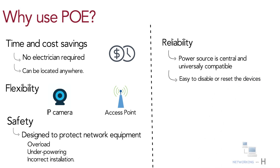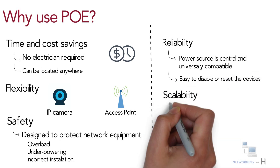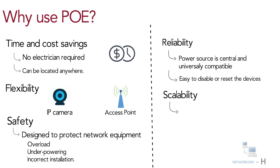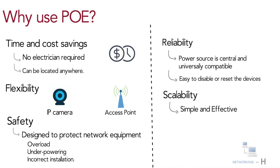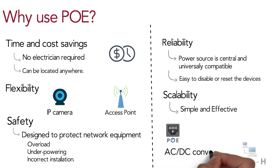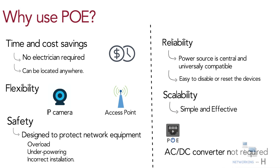The next advantage is scalability. Having power available on the network means that the installation and distribution of network connections is simple and effective. Since it supplies DC power over the Ethernet cable, devices do not need an AC-to-DC converter.